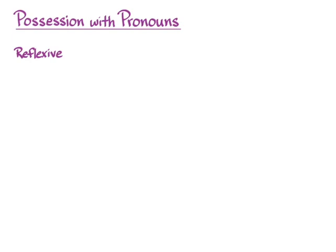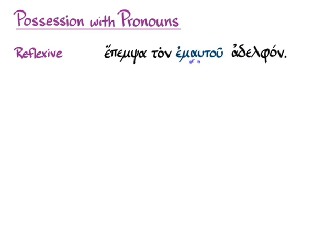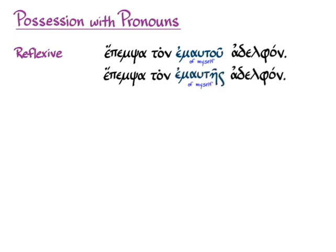We also want to talk about what happens when you need the idea of reflexiveness, where the possessive adjective or pronoun looks back to the subject of the sentence. Epempsa ton emautou adelphon means 'I sent the brother of myself' — 'I sent my own brother.' Because emautou is masculine, the subject of epempsa must be masculine. We can also have epempsa ton emauteis adelphon — 'I sent my own brother' — where the feminine pronoun tells us the subject is a woman.